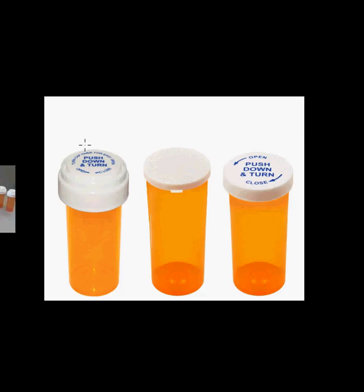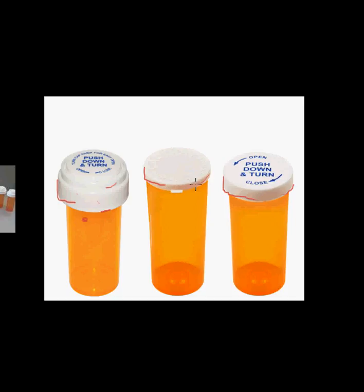With vials we're going to have lids. This picture shows the different vial sizes side by side. The cap on the far right is a child-proof cap — you have to push down and twist to get it off. This cap here is also a child-protective cap: push down and twist to remove it, but if you flip it over it can screw on as an easy-off for people with arthritis or difficulty getting caps off.